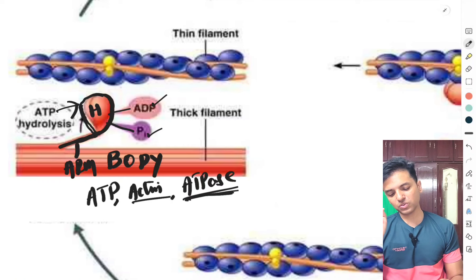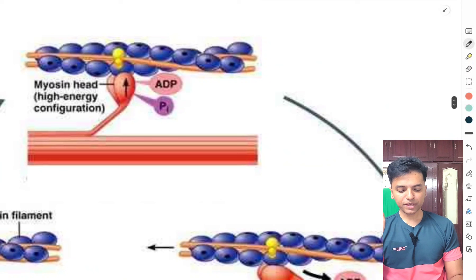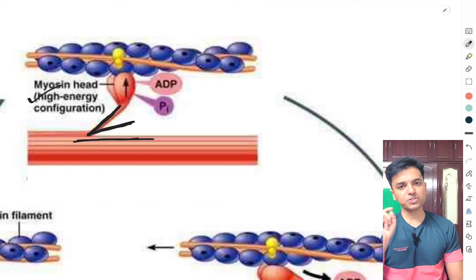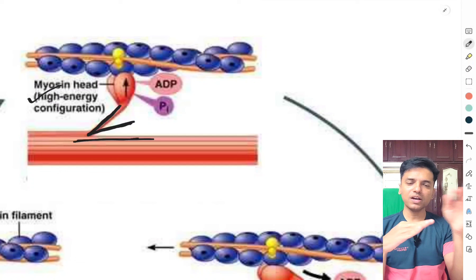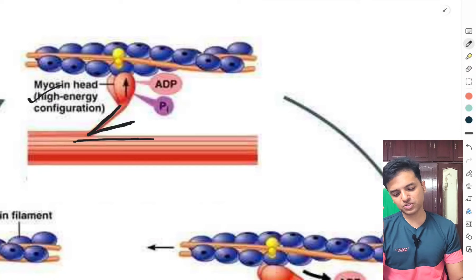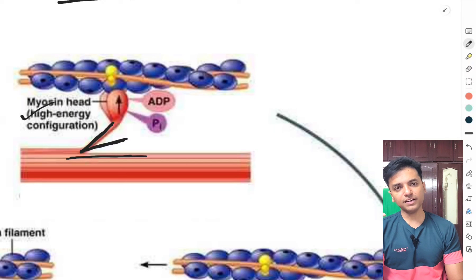When this incomplete hydrolysis occurs, the cross bridge changes position — it becomes more perpendicular to the body of the myosin. This position is called the high energy configuration of the cross bridge, or also called the cocked-up position. So once ATP binds and undergoes partial hydrolysis, the cross bridge becomes more perpendicular — this is the high energy or cocked-up configuration.